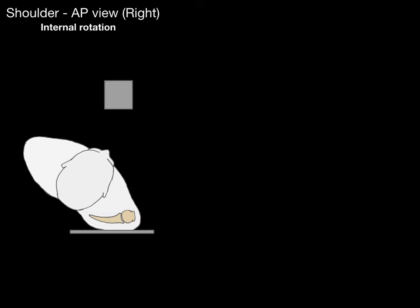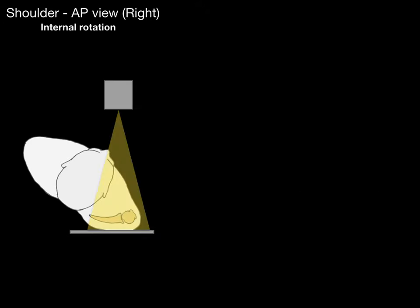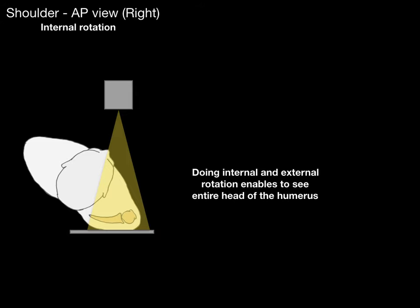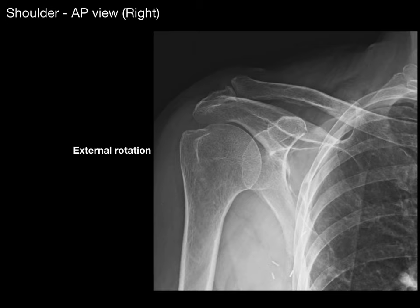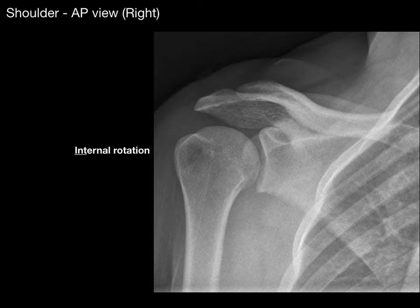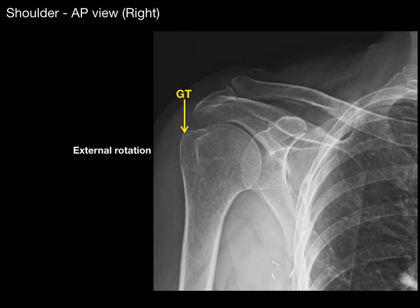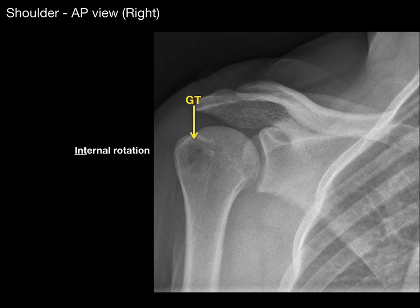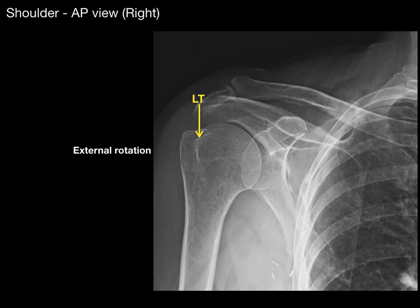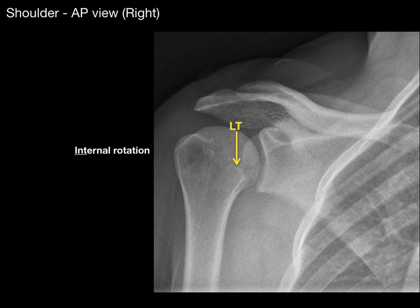Now let's look at the shoulder AP view with internal rotation. The humerus is internally rotated to best see the lesser tubercle. Doing internal and external rotation together enables us to get an entire view of the head and proximal humerus. In external rotation we best see the greater tubercle; in internal rotation it shifts position. The lesser tubercle is also visible in both views, and you can see it coursing more anteriorly in internal rotation.